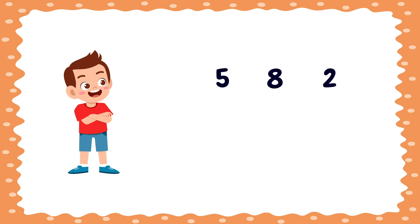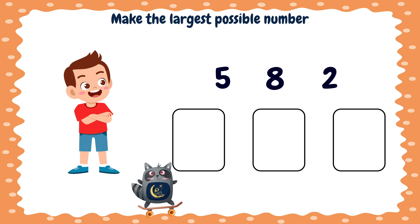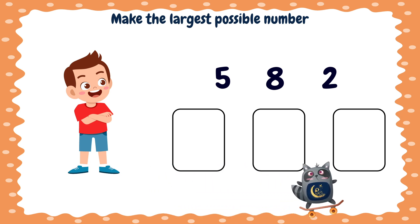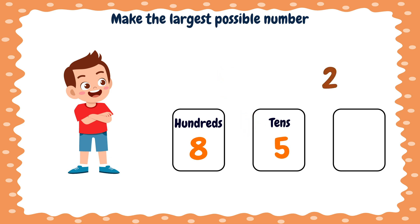Now it's time for a challenge. Look with me. We have three numbers: five, eight, two. And we want to make out of them the largest number that consists of three place values. In order to make the largest number, we will put in the hundreds place the largest number. Which of these numbers is the largest? The number eight. Excellent. Therefore, we will put it in the hundreds place. We have two numbers left, so we will put the largest number in the tens place. Which number is the largest? The number five. Well done. So we will put it in the tens place. Then we put the number two in the ones place.